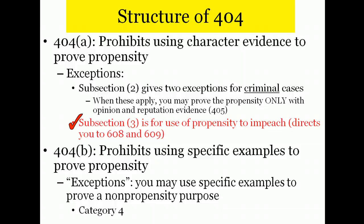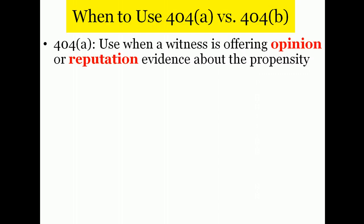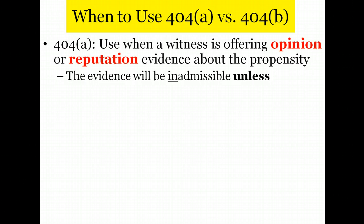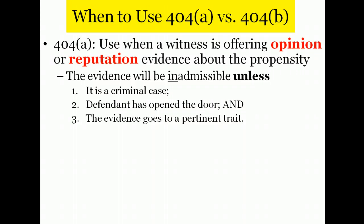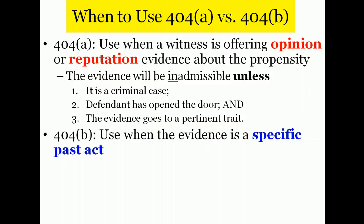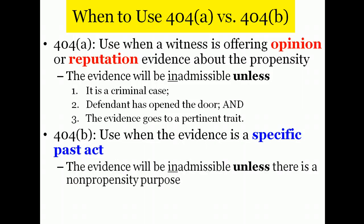It is helpful to think about the rule this way. You'll want to use Rule 404a when a witness is offering opinion or reputation evidence about a propensity. That evidence will be inadmissible unless it falls within one of the exceptions — it must be a criminal case, the defendant must have opened the door, and the evidence must go to a pertinent trait. On the other hand, you'll want to use Rule 404b when the evidence is a specific past act. That evidence will be inadmissible to prove propensity, but if you can show a non-propensity purpose, you'll be able to offer the evidence for that other purpose subject to Rule 403.